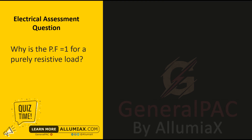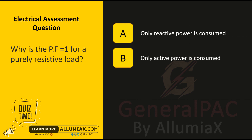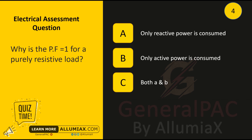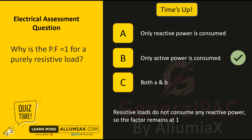Why is the power factor one for a purely resistive load? A: Only reactive power is consumed, B: Only active power is consumed, C: Both A and B. Time's up. The answer is B: Only active power is consumed. Resistive loads do not consume any reactive power, so the power factor remains at one.